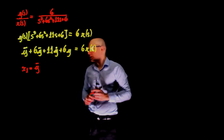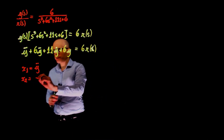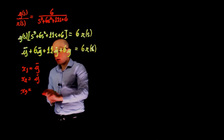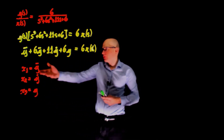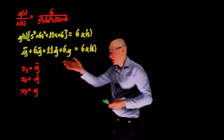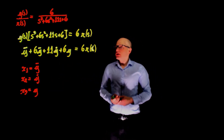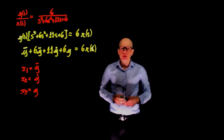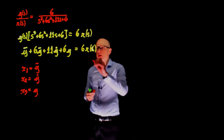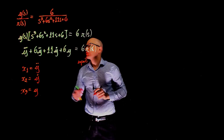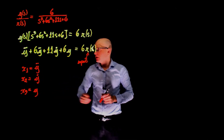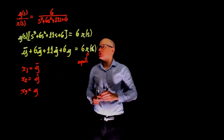So x1 = ÿ, x2 = ẏ, and x3 = y. We could also reverse this and have x1 = y going the other way. These are the states of the system. The input is already defined — it is r(s) or r(t). And from the transfer function, y(s) is the output of the system, so x3 is also the output. Now, with the expression in the temporal domain and our state variables defined, we can rewrite this expression as a function of the state variables.